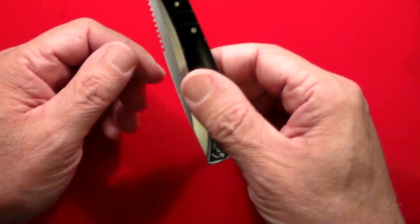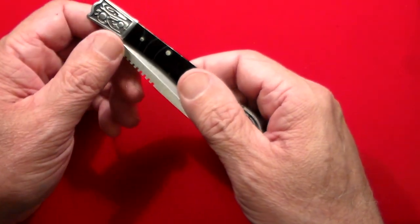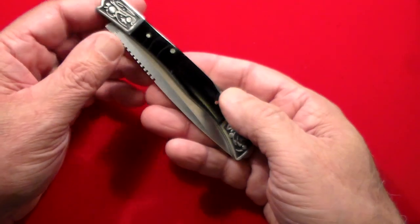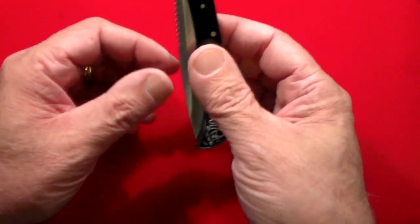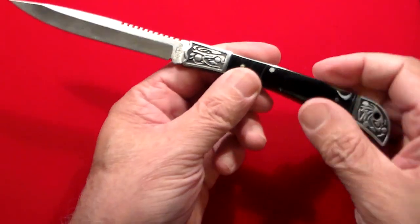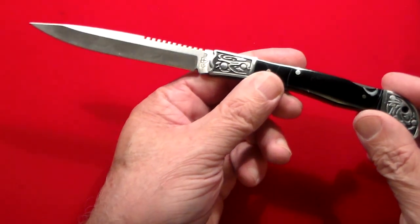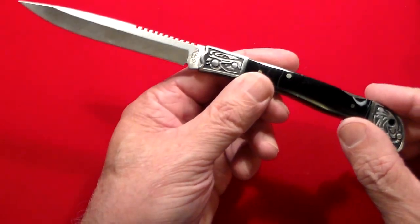First off, let's go through the specs. It's nice and light. It's only 3 1⁄2 ounces. So you can slide this into your pocket, and you don't even know it's there. It's 7 inches overall in length. So not small, not too big. 3 1⁄2-inch blade.